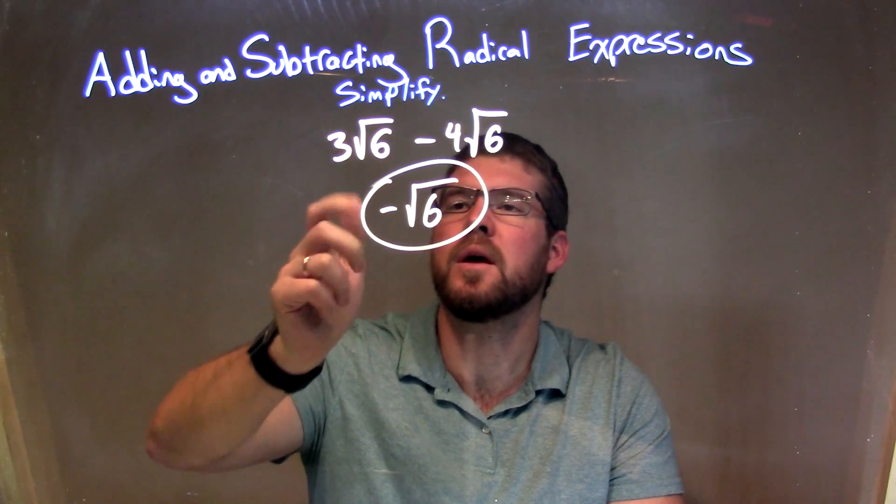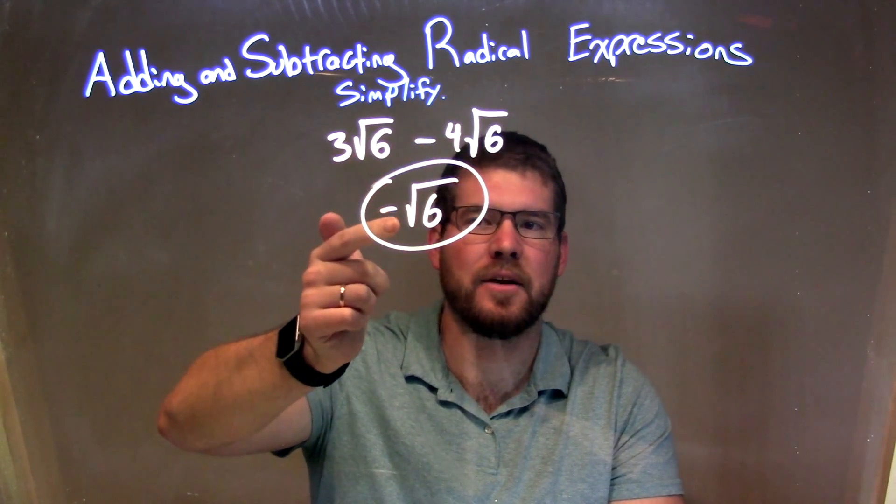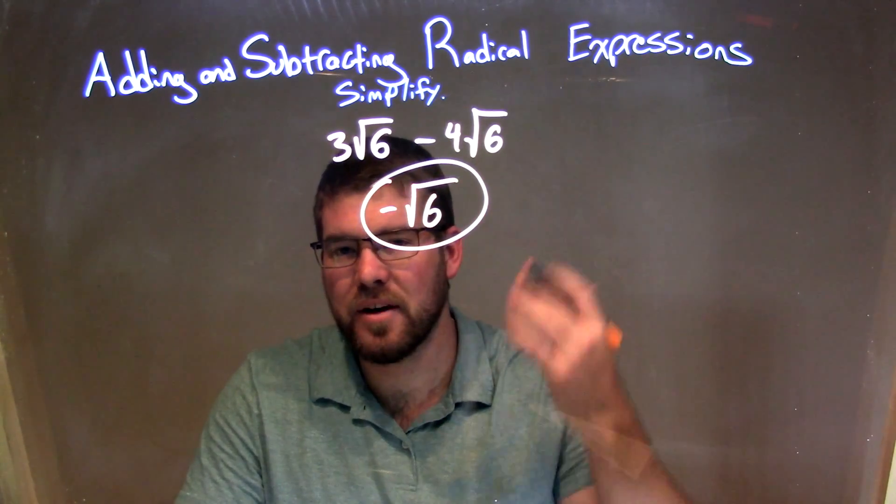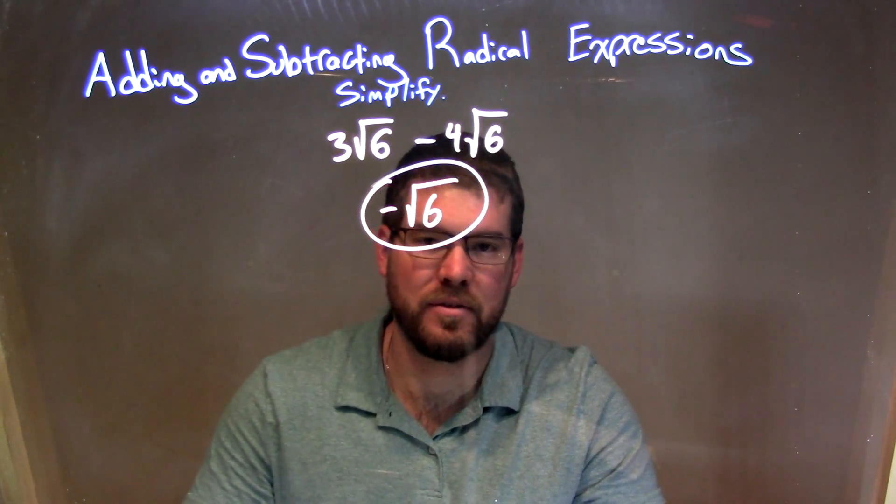with the multiplication implied, we just subtract 3 minus 4, which is negative 1, shown by just that negative right there, and we keep the square root of 6, giving us our final answer of negative square root of 6. We'll see you next time.